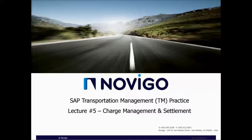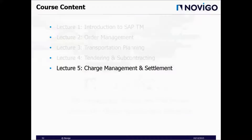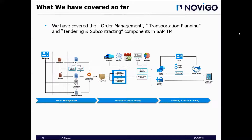Welcome to Novigo's fifth lecture on SAP Transportation Management practice course. In this lecture we cover charge management and settlement. So far in our previous lectures we've covered order management, transportation planning, tendering and subcontracting steps in SAP Transportation Management. We saw how we can receive orders from customers, how we can create freight units, how we can plan freight units into freight orders and freight bookings, how we can tender our freight orders.